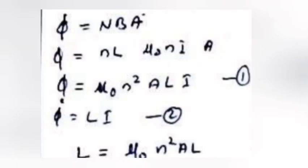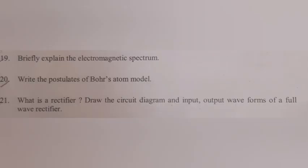Φ equals Nba equals Nl μ₀ni equals μ₀n²ali equals Li. Therefore L equals μ₀n²al.